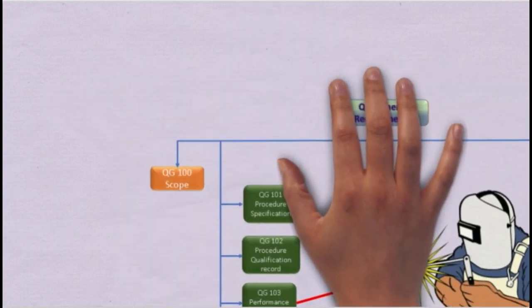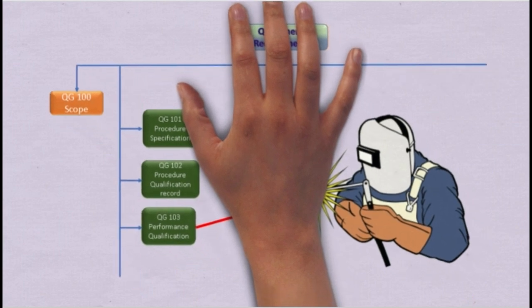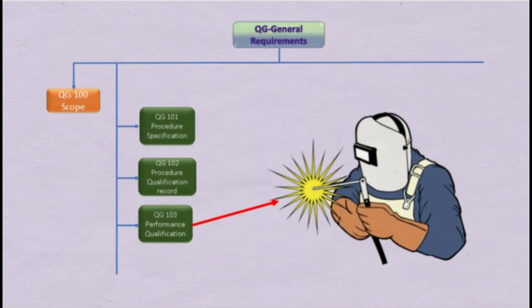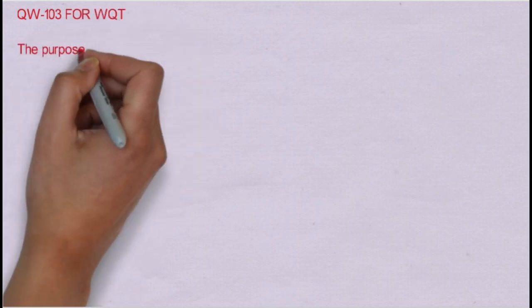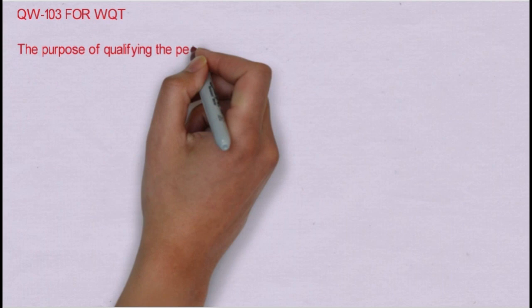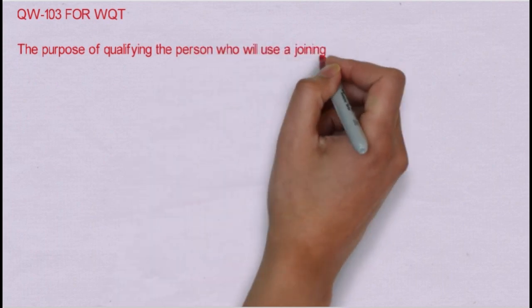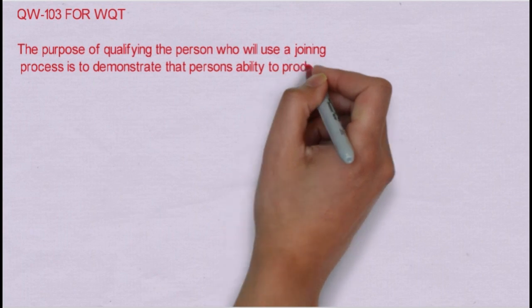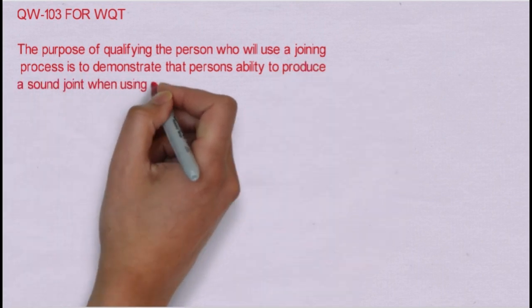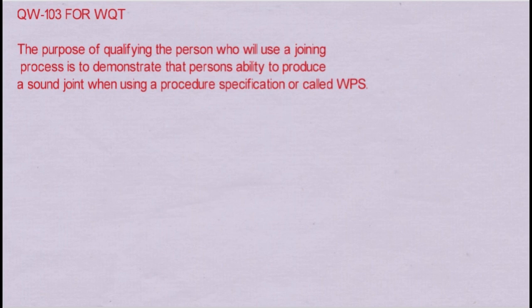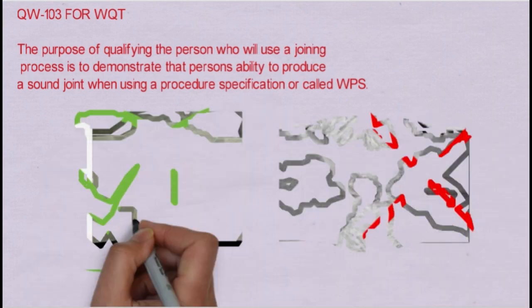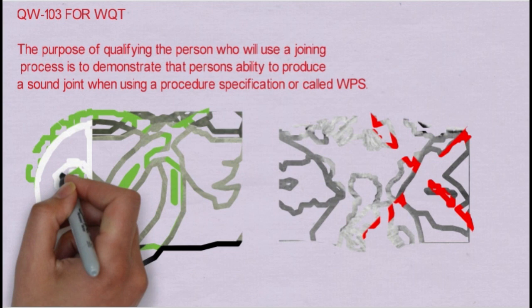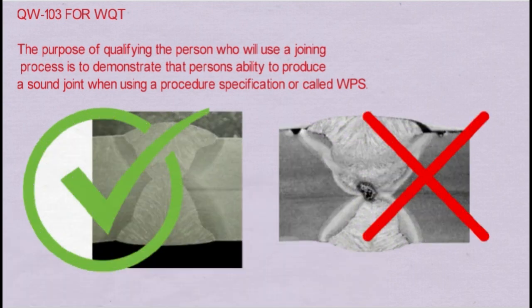Our next topic is clause QG103 for Performance Qualification. QG103 is for the Welder Qualification Test (WQT). The purpose of qualifying the person who will use a joining process is to demonstrate that person's ability to produce a sound weld when using a Welding Procedure Specification (WPS). As shown in the picture, we need a weld with soundness for the welder performance test.